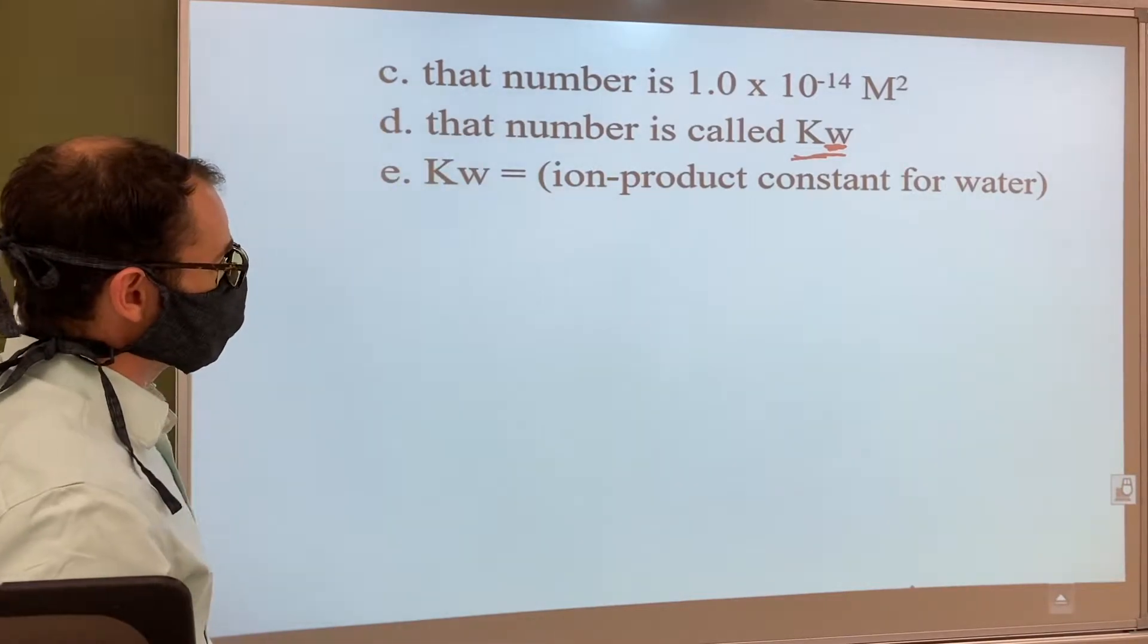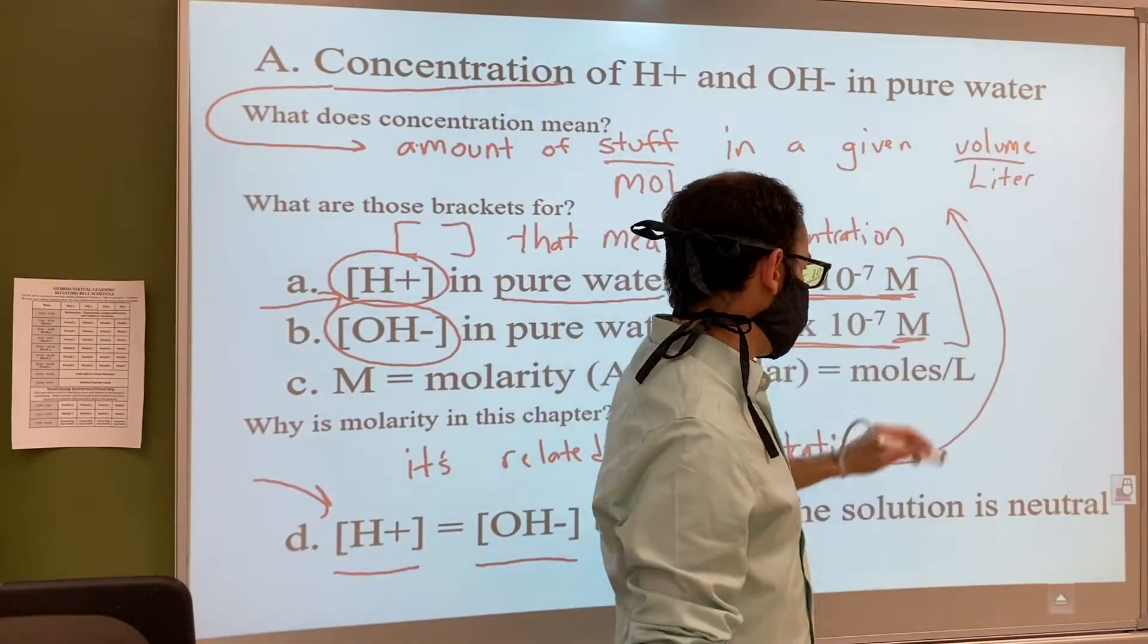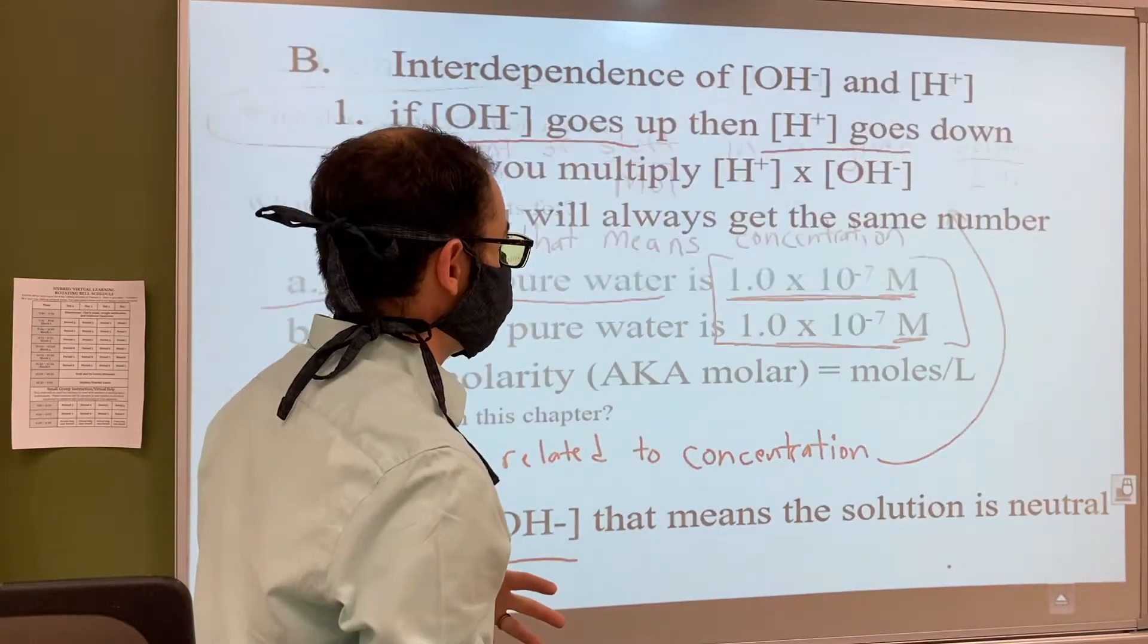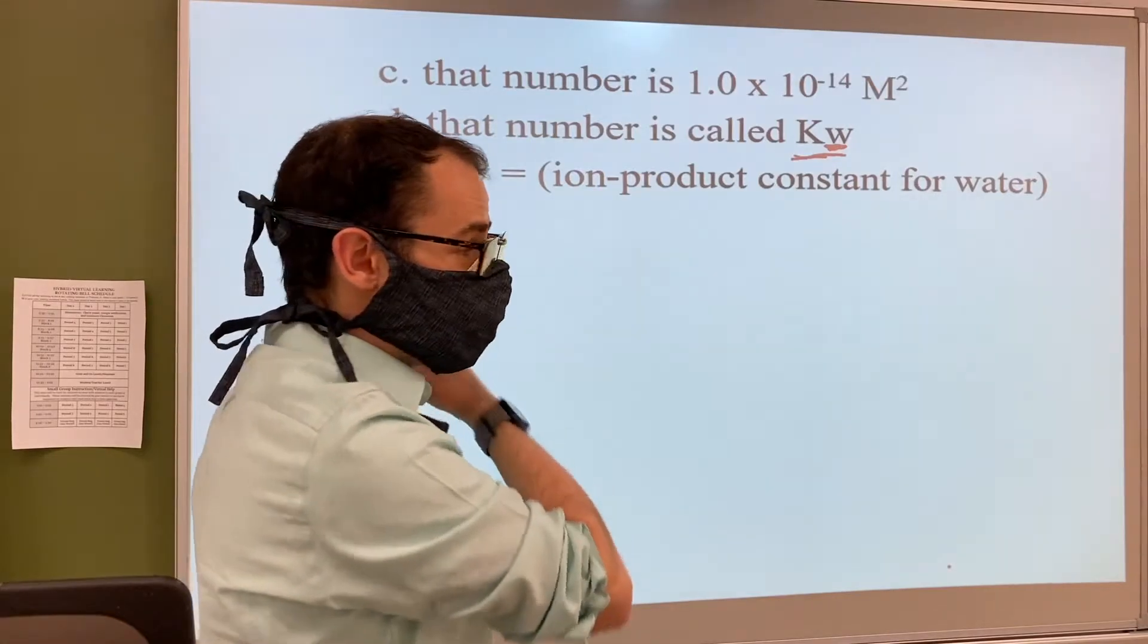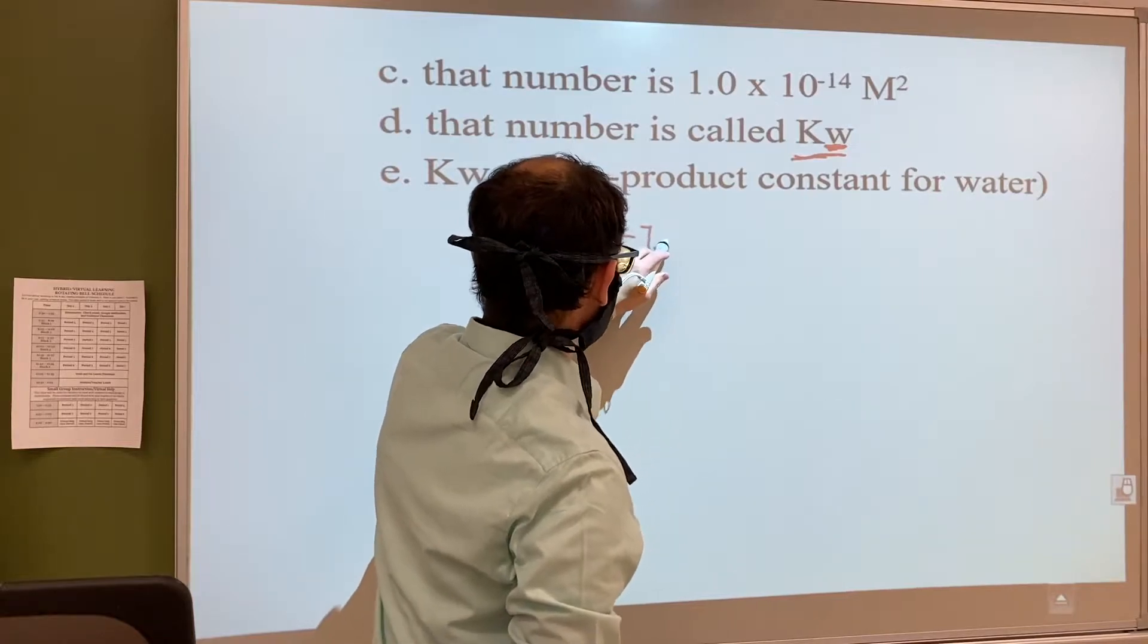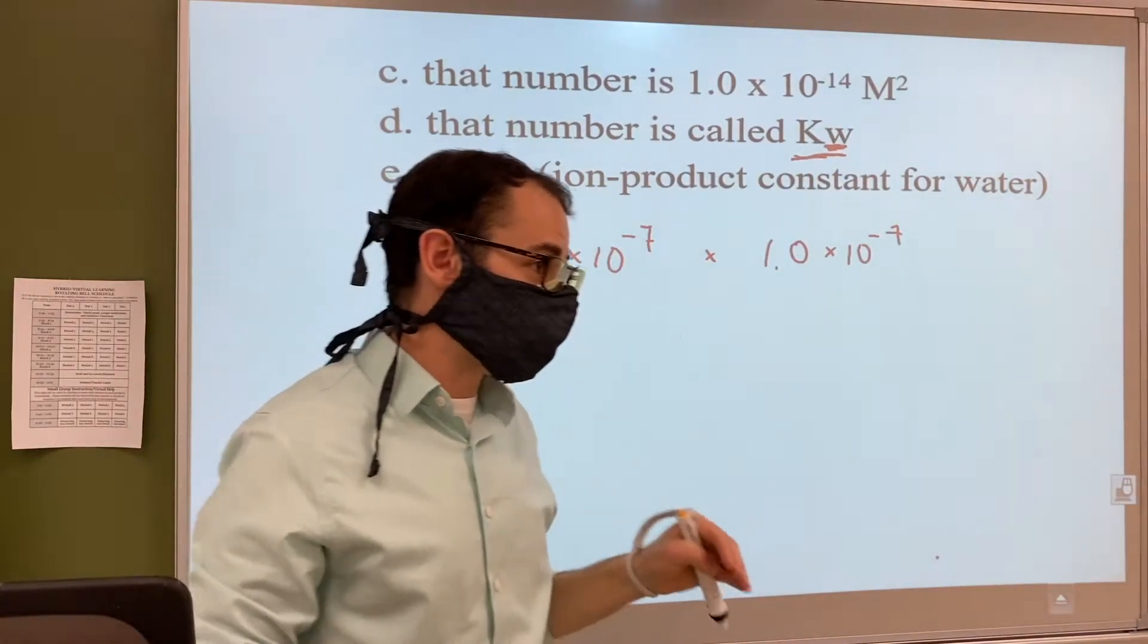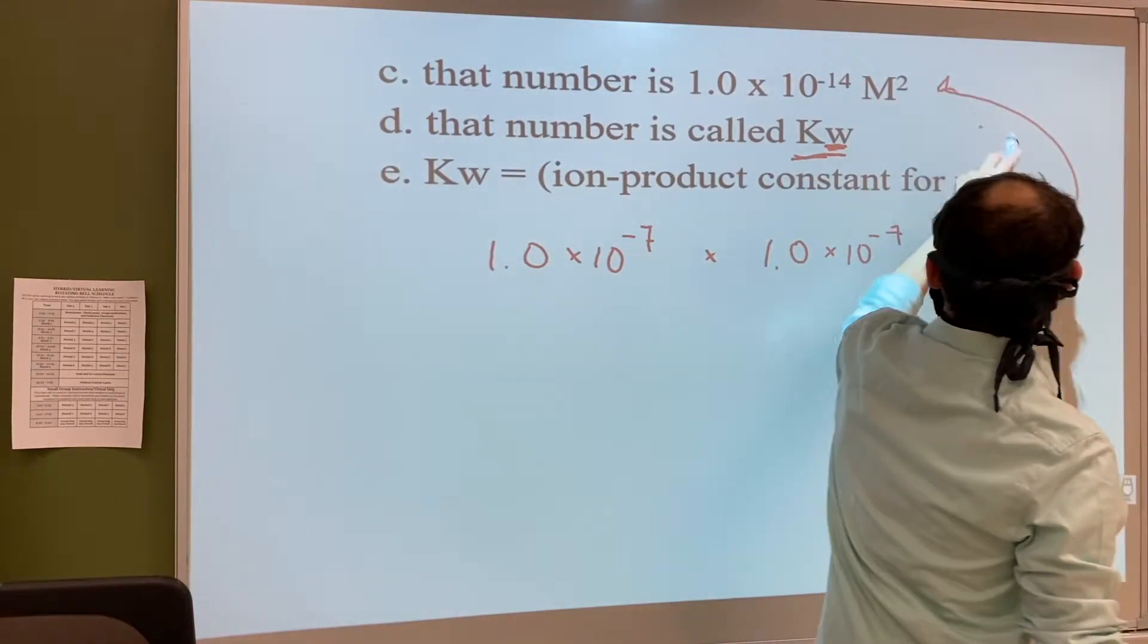So if we put those two numbers in our calculator we should get 1.0 × 10^-14. We're going to try that because it's important for us to make sure we know how to use our calculators. So 1.0 × 10^-7 times 1.0 × 10^-7. Take a moment, plug that into your calculator and see if you do get this.